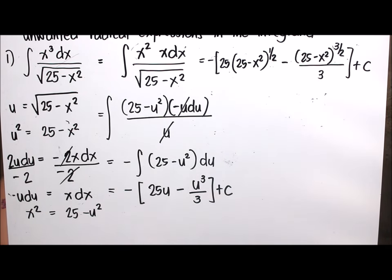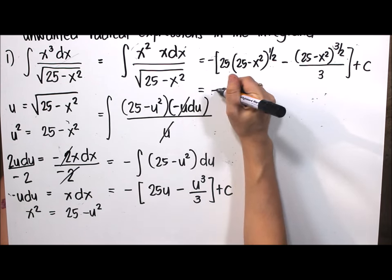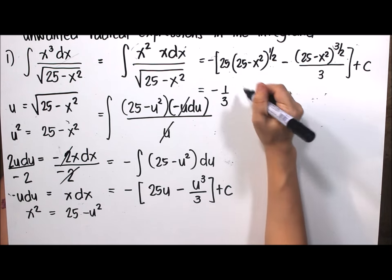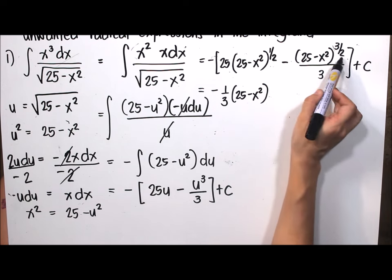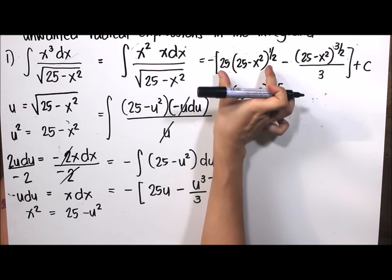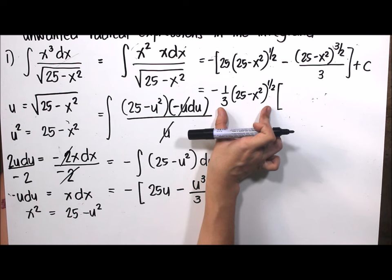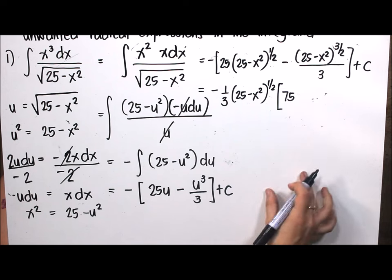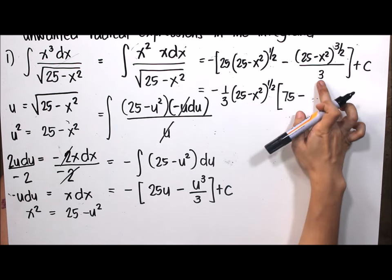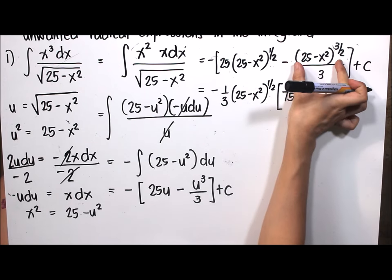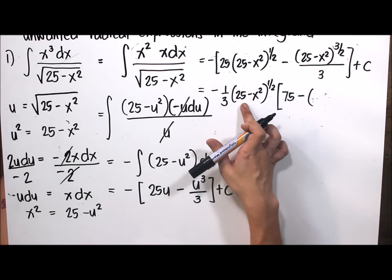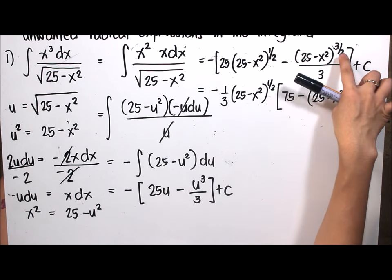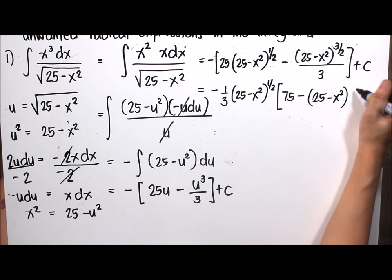To simplify, we factor out negative one-third and the common base (25 minus x squared)^(1/2). Dividing each term, 25 divided by one-third gives 75. For the second term, (25 minus x squared)^(3/2) divided by (25 minus x squared)^(1/2) uses the same-base rule: subtracting exponents 3/2 minus 1/2 gives exponent 1.